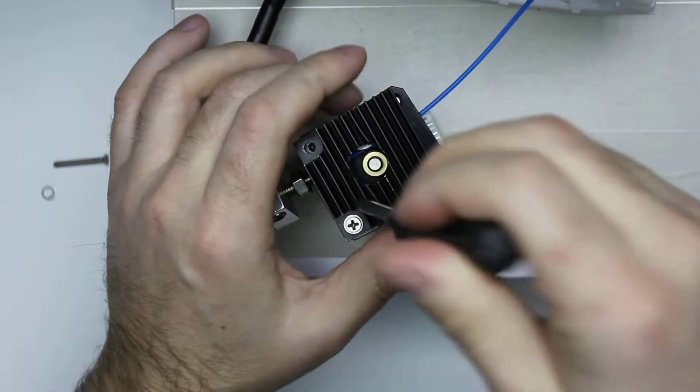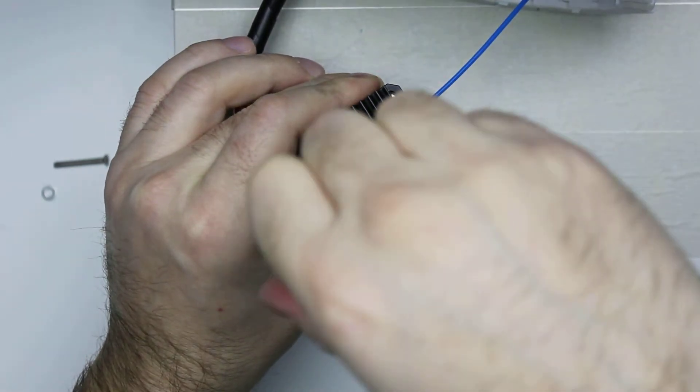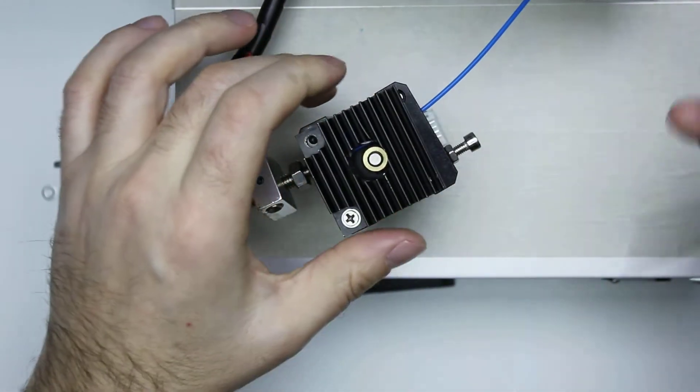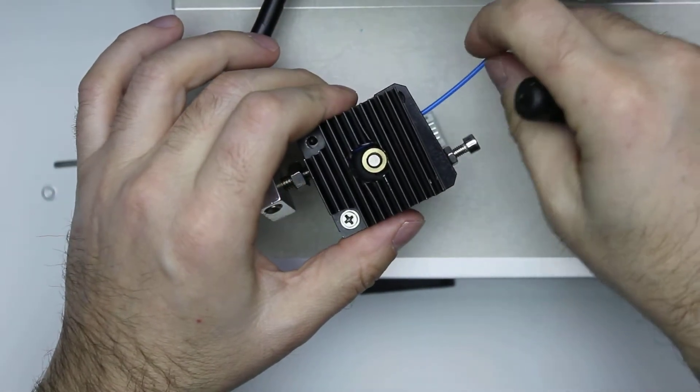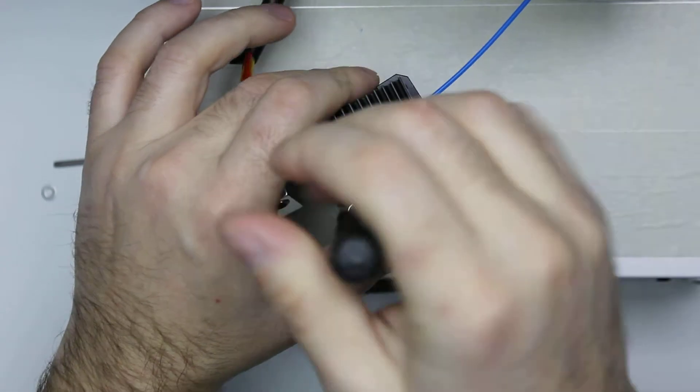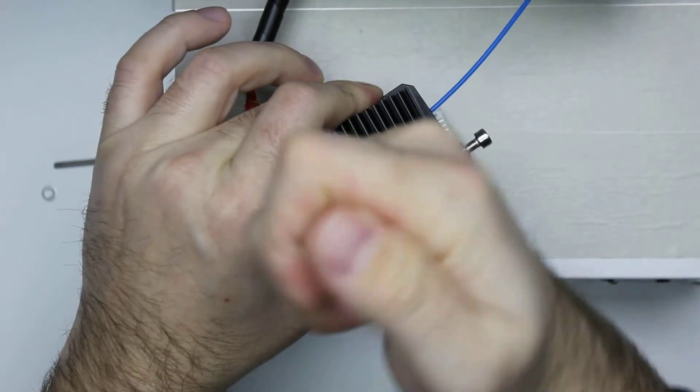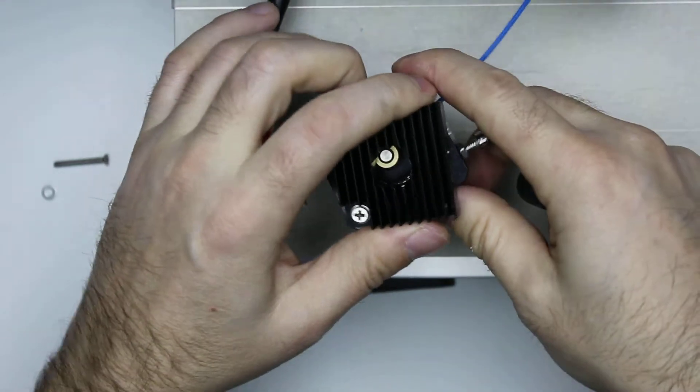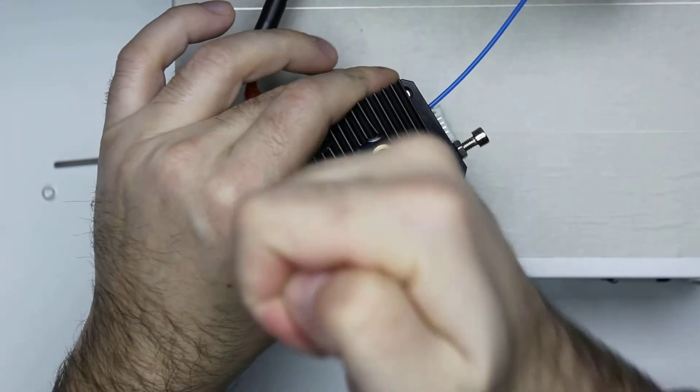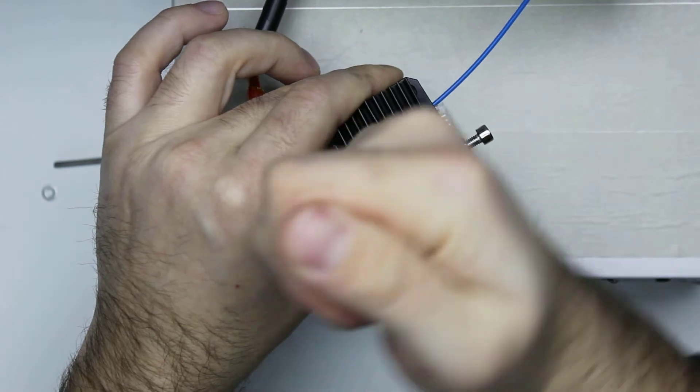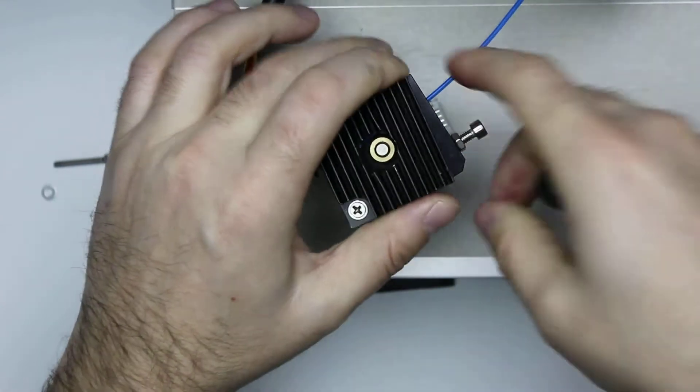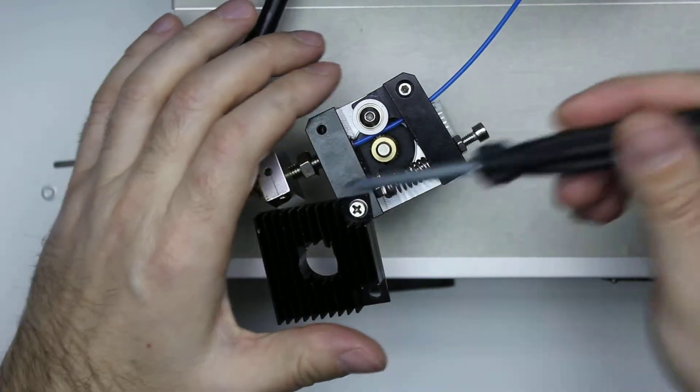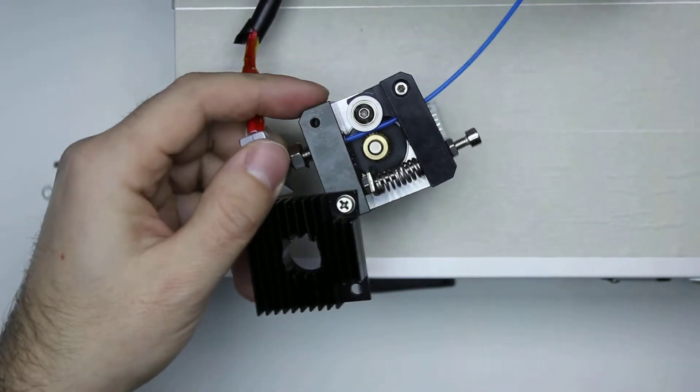If that spring is too tight, the filament will get broken or just snap. And if that spring is too loose, the motor will not be able to consistently drive the filament through the nozzle.